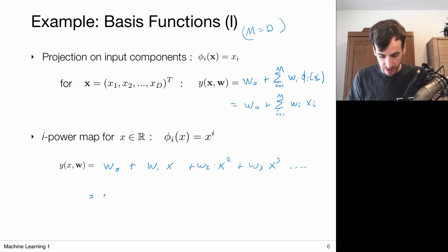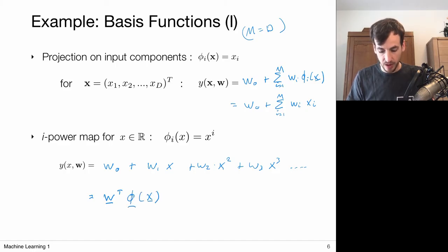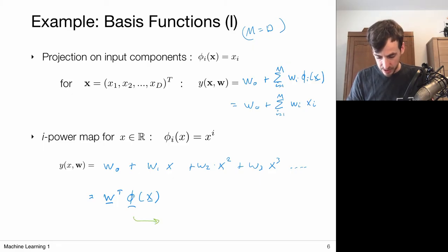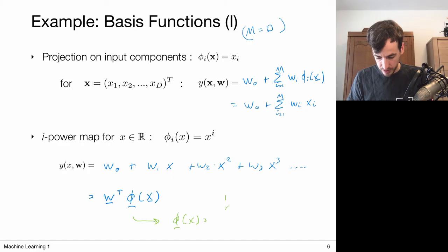I can formulate this in vector notation as W transpose, scalar product with my basis vector, where phi(X) is given by [1, X, X^2, X^3, ...] et cetera.